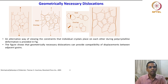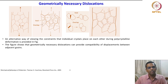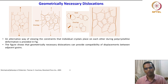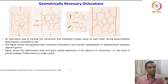The figure shows that geometrically necessary dislocations can provide compatibility of displacements between adjacent grains. Without constraint, voids and overlaps would ensue — but instead of voids, there can be a dislocation spread at the interface; instead of overlaps, there can be a dislocation distribution between them, just to accommodate that kind of constraint.